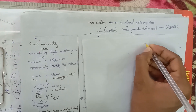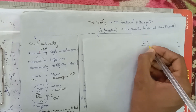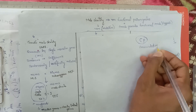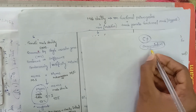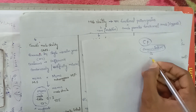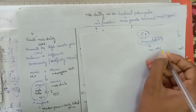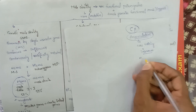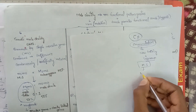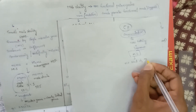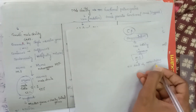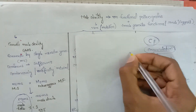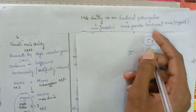Male sterility is helpful in cross-pollination. In olden days, for development of hybrids, emasculation had to be done. Emasculation is a time-consuming and laborious process. So instead of this, if we use the male sterile lines, we need not go for emasculation. Male sterility can sporadically occur and it rarely occurs due to mutations.